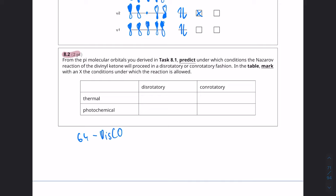The way I remember the rules is by remembering 64 disco. So this is kind of a phrase I memorized. And basically the first number associates with the first half of the word and the second number with the second half. And I just memorized that this is for thermal. So basically if we have six electrons and it's thermal then it's going to be disrotatory because six goes with disrotatory if it's thermal.